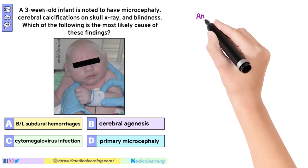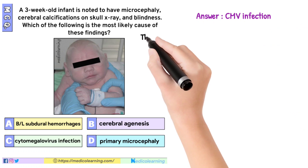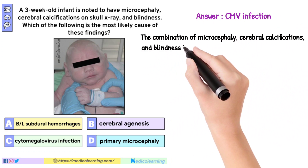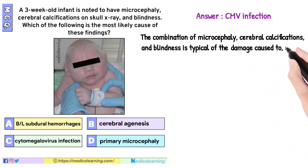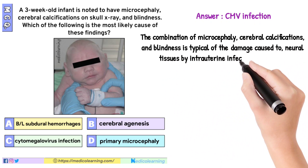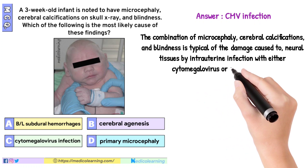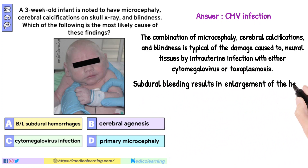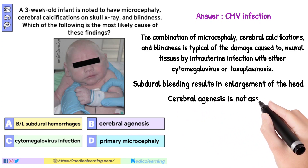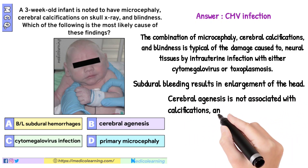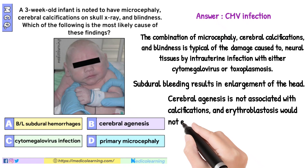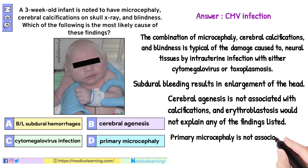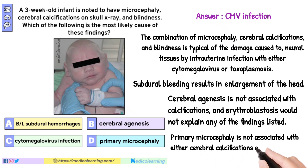In this question, the answer is Cytomegalovirus infection. The combination of microcephaly, cerebral calcifications, and blindness is typical of the damage caused to neural tissues by intrauterine infection with either cytomegalovirus infection or toxoplasmosis. Subdural bleeding results in enlargement of the head. Cerebral agenesis is not associated with calcifications, and erythroblastosis would not explain any of the findings listed. Primary microcephaly is not associated with either cerebral calcifications or blindness.